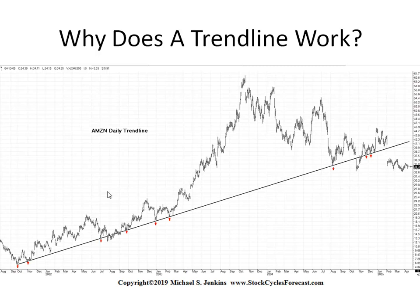Gann used the planets as precise time keepers, so the representations of various sloped triangles all equating to one unit of time — which is planetary longitude — and one unit of price are correct 45-degree relationships. If a top price is $73 and you move the moon, or any other planet, 73 degrees longitude, then time and price will be equal and you will see a change in trend.